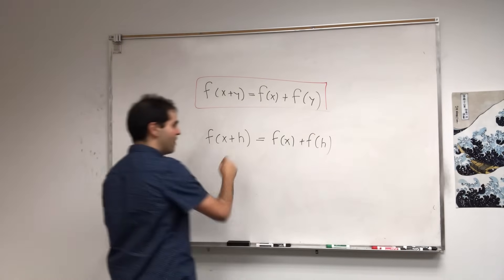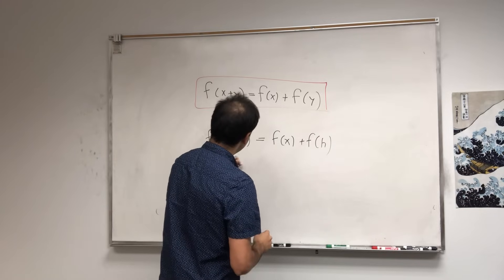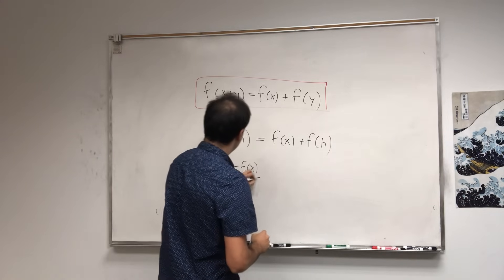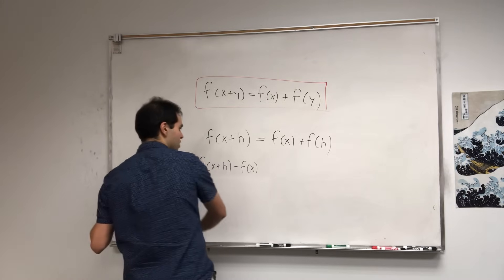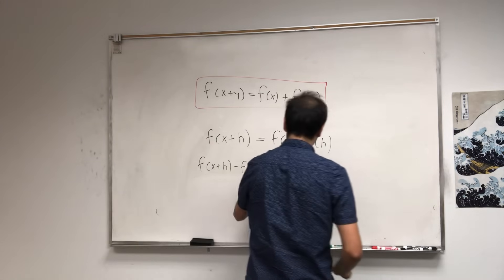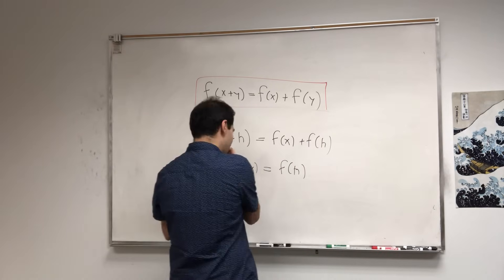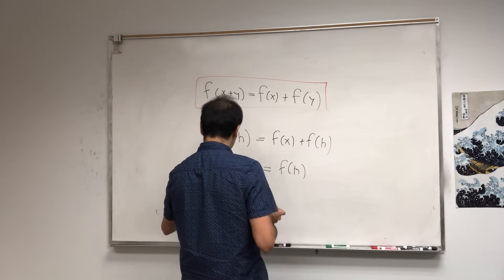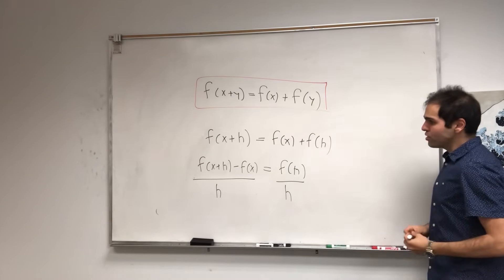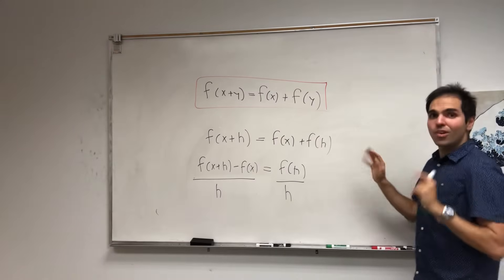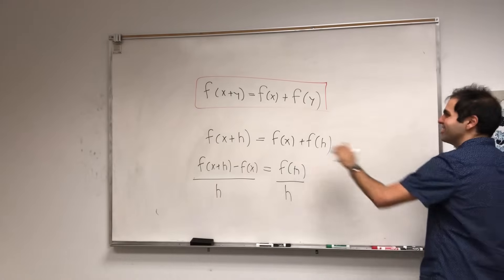Let's pull the f(x) to the left-hand side. So f(x+h) minus f(x) equals f(h). Then divide by h. That's not quite interesting yet — almost. We'll let h go to zero.